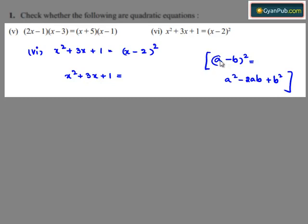So applying this formula for x minus 2 whole square we get x square minus 4x plus 4.